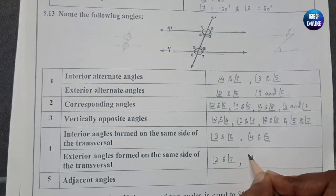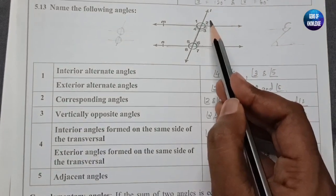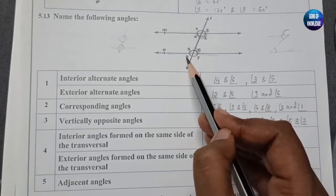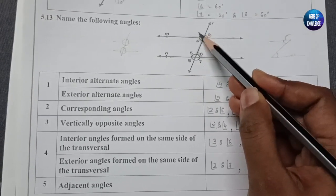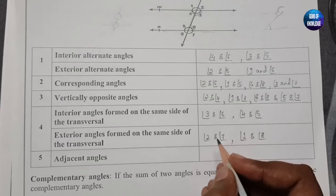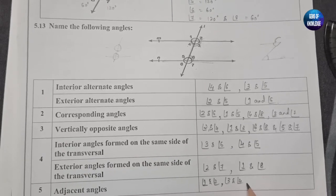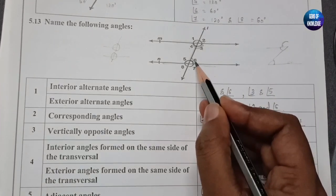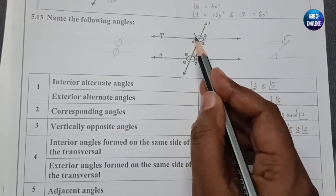Exterior angles formed on the same side of the transversal are angle 2 and angle 7, and angle 1 and angle 8. Adjacent angles are side-by-side angles: 1 and 2, 3 and 4, 5 and 6, 7 and 8. You can also write 2 and 3, 6 and 7, 1 and 4, and 5 and 8 as adjacent angles since they are also side by side.